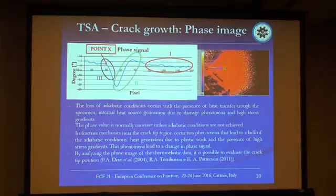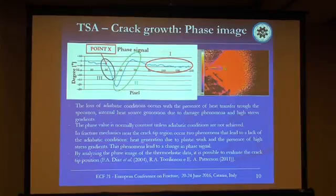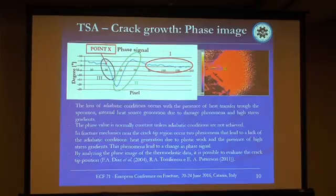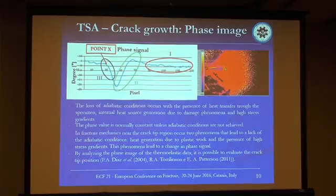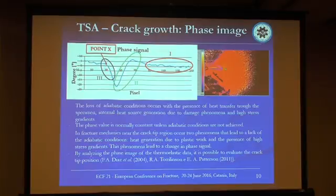With thermo-elastic stress analysis, on the right we can see the classical phase image acquired during a fracture mechanics test. The phase value is normally constant unless the adiabatic condition is not achieved, as in the region far from the crack tip. Near the crack tip region, two phenomena lead to a departure from the adiabatic condition: heat generation due to plastic work, and the presence of high stress gradients. This causes a variation in the phase signal from positive to negative. Then, as the crack tip grows, the phase signal returns from negative to positive, allowing us to estimate the position of the crack tip.